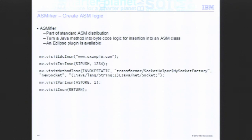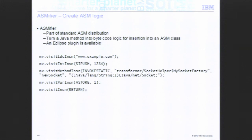One of the best things ASM provides is an Eclipse plugin called ASMifier. It allows you to take a method body and turn the contents into ASM logic automatically. You install the plugin, open up the bytecode perspective or bytecode view in Eclipse, click on a method in your class, and it opens a window that prints out the ASM code. Some additional code does get printed out, so a little expertise is needed to understand what to ignore. The ASM manual provides all that information.